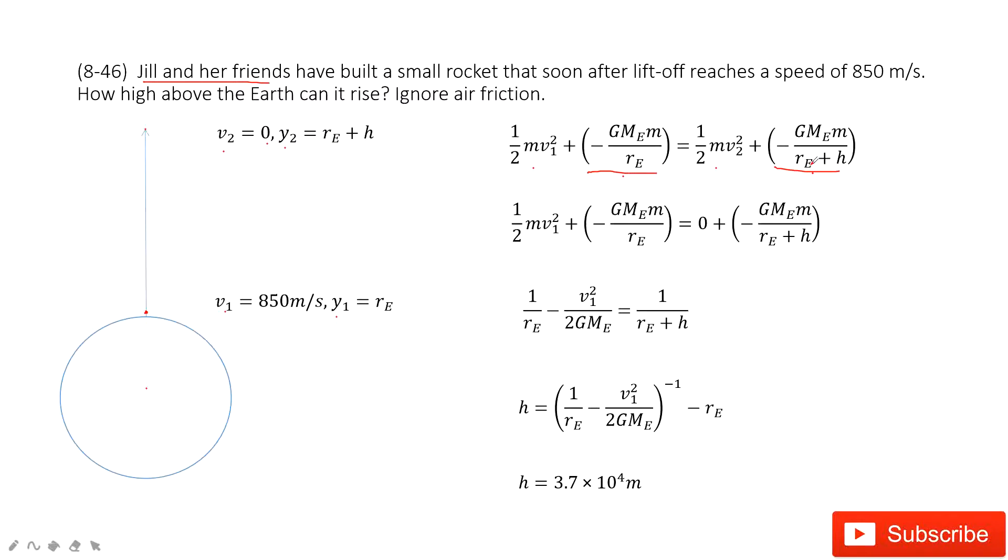You can see we input the known quantities, V2 equals zero. Therefore we can solve the equation to get the function for h. This h is how much the rocket traveled to reach the peak point. Then input the quantities inside.